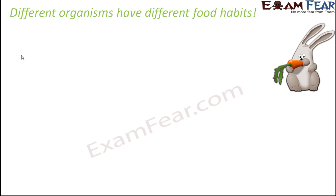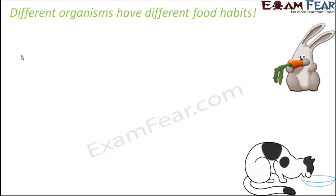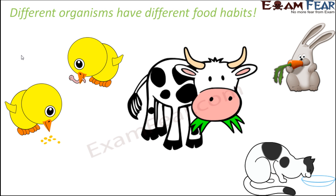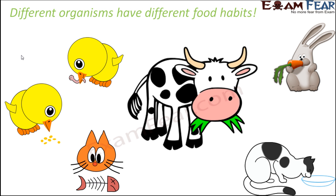If you look at a rabbit, it has a different food habit than a cat. A cat mostly feeds on other animals — for example, a cat eats fish — whereas a rabbit loves to eat carrots. Many birds feed on tiny insects or worms, while others feed only on seeds or leaves. Animals like cows feed on grasses and plant parts.